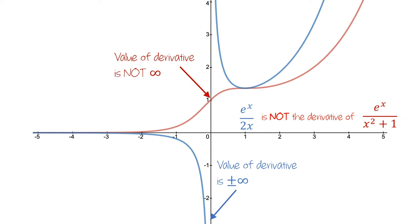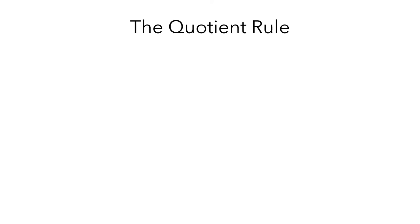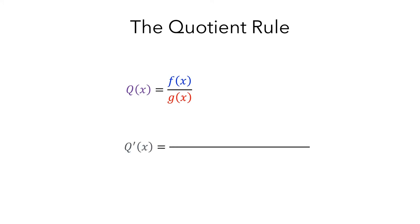We need a special rule to compute derivatives of quotients. The quotient rule for derivatives is as follows: if we have a function q of x, which is the quotient of f of x divided by g of x, then the derivative q prime of x is given by g of x times f prime of x minus f of x times g prime of x, all divided by g of x squared.